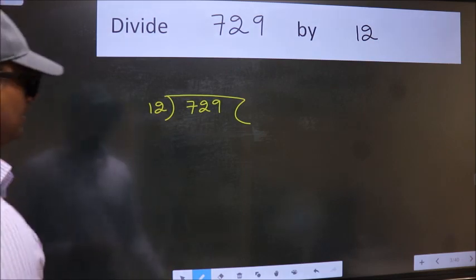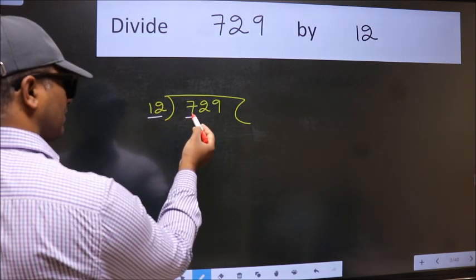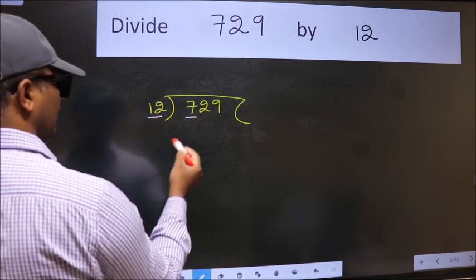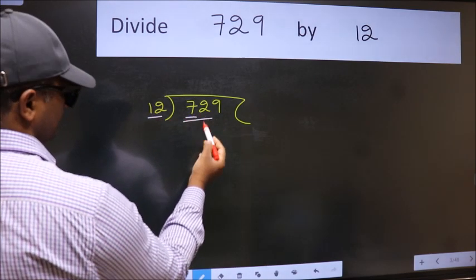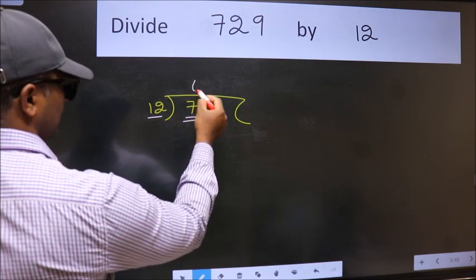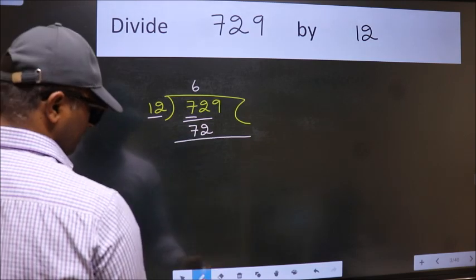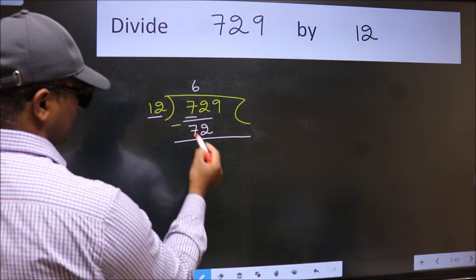Next. Here we have 7 and here 12. 7 is smaller than 12. So take two numbers, 72. When do we get 72 in 12 table? 12 times 6, 72. Now we should subtract. We get 0.